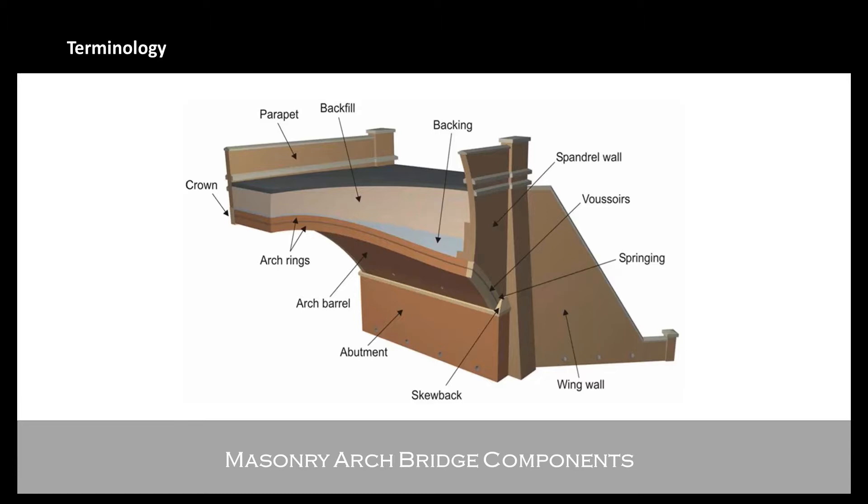Then to form a nice road level or rail surface, we would normally put in fill above the barrel, and we may have backing as well, which is typically formed from masonry or concrete directly behind the haunches of the arch barrel in order to provide additional resistance.